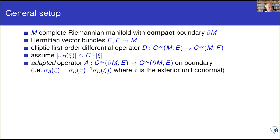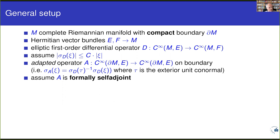The key assumption is that A is a formally self-adjoint operator. If D is a Dirac-type operator, then A is also a Dirac-type operator and can be chosen to be formally self-adjoint. There are other situations — for example, the Rarita-Schwinger operator — where A cannot be chosen self-adjoint, and then the whole setup needs to be modified. But as long as you are interested in Dirac-type operators, A is a Dirac-type operator and all these assumptions are satisfied. We make the same assumption for the formally adjoint operator D*, giving a boundary operator Ã mapping sections of F to F.